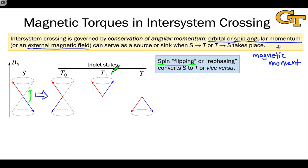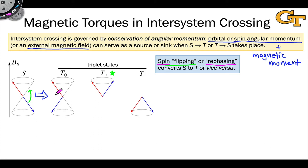There's another way that intersystem crossing can take place, and it involves what we might call spin re-phasing. The idea is that one of the spins slows down with respect to the other, leading to a realignment of the spins and a change in the phase angle between the two. We noted phase in the vector model of spins as an important difference between the singlet and triplet states — 180 degrees out of phase for the singlet state, and in phase for the T0 state and all other triplet states. Spin re-phasing involves a net motion of the blue spin 180 degrees with respect to the red spin so that the T0 state is generated, and it comes from a difference in the precession rates of the two spins.